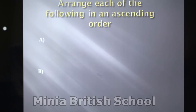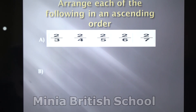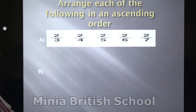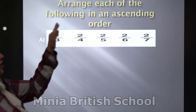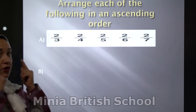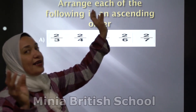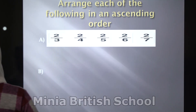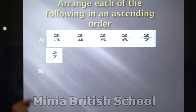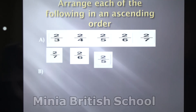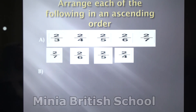Arrange the following in ascending order. You have 2 over 3, 2 over 4, 2 over 5, 2 over 6, and 2 over 7. All the numerators are the same, so you must look at the denominators. Which one is the smallest fraction? For ascending order, we start smallest to greatest. It's 2 over 7, after that 2 over 6, after that 2 over 5, after that 2 over 4, and the greatest one is 2 over 3.